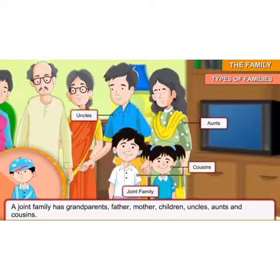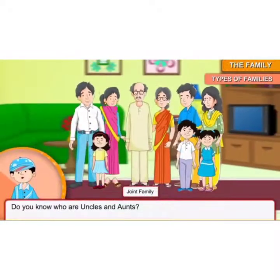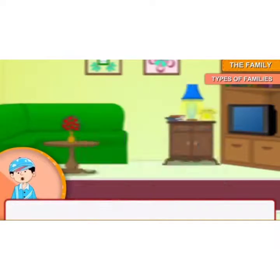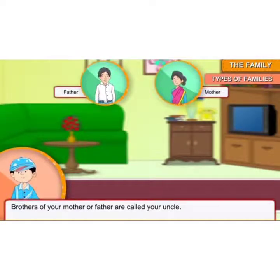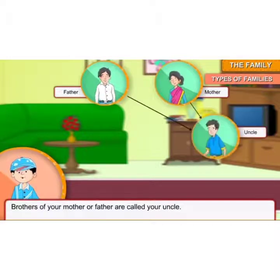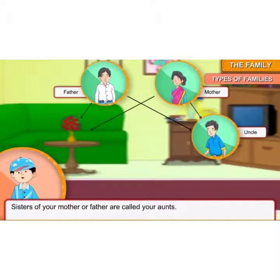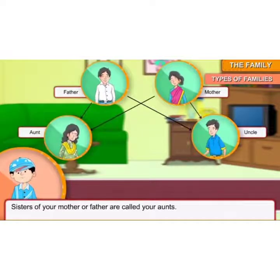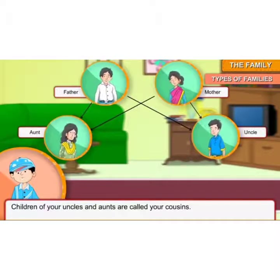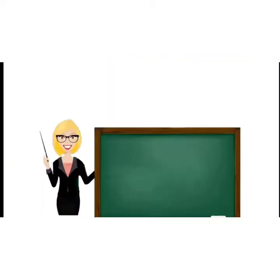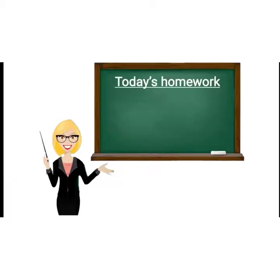Do you know who are uncles and aunts? Brothers of your mother or father are called your uncles. Sisters of your father or mother are called your aunts. Children of your uncles and aunts are called your cousins. Now it's time for today's homework.